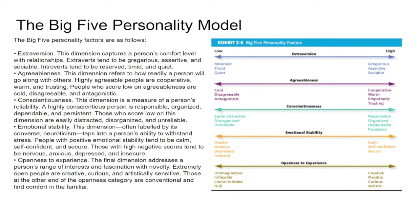Agreeableness refers to how readily a person will go along with others. Highly agreeable people are cooperative, warm, and trusting. People who score low on agreeableness are cold, disagreeable, and antagonistic. Conscientiousness is a measure of a person's reliability — highly conscientious people are responsible, organized, dependable, and persistent. Those who score low are easily distracted, disorganized, and unreliable. Emotional stability — often labeled by its converse, neuroticism — taps into a person's ability to withstand stress.